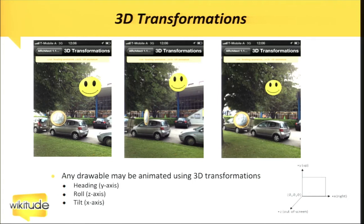We've also added 3D transformations, which allow you to rotate objects around all three axes. Usually objects are oriented directly toward the user, but this allows you to have, for example, this Euro coin rotating around itself.